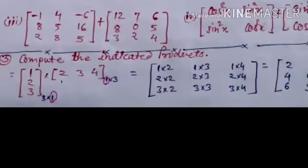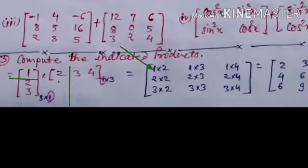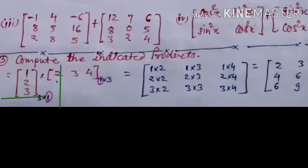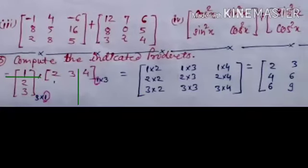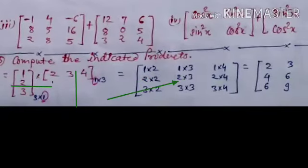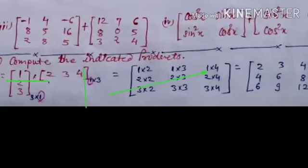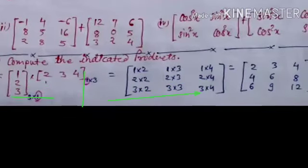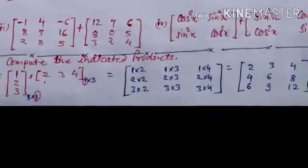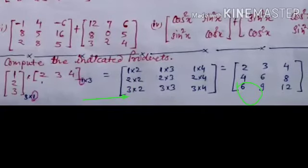Let's start the multiplication of the two matrices. First row and first column: 1 multiplied by 2. Second row, first column: 2 into 2. Third row, first column: 3 by 2. First row, second column: 1 into 3. Second row, second column: 2 into 3. Third row, second column: 3 into 3. First row, third column: 1 into 4. Second row, third column: 2 into 4. Third row, third column: 3 into 4.